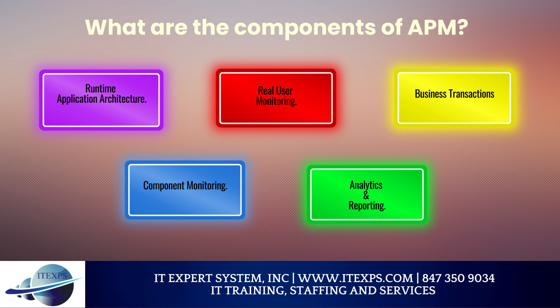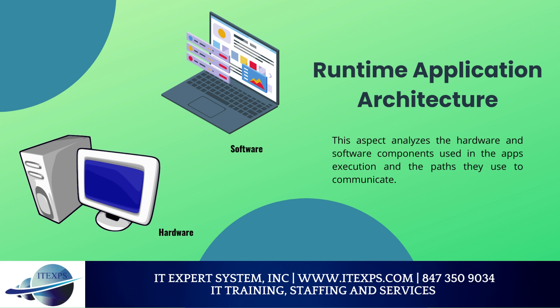What are the components of APM? Application performance monitoring focuses on tracking five primary components of app performance: 1. Runtime application architecture, 2. Real user monitoring, 3. Business transactions, 4. Component monitoring, 5. Analytics and reporting. Runtime application architecture analyzes the hardware and software components used in the app's execution and the paths they use to communicate.